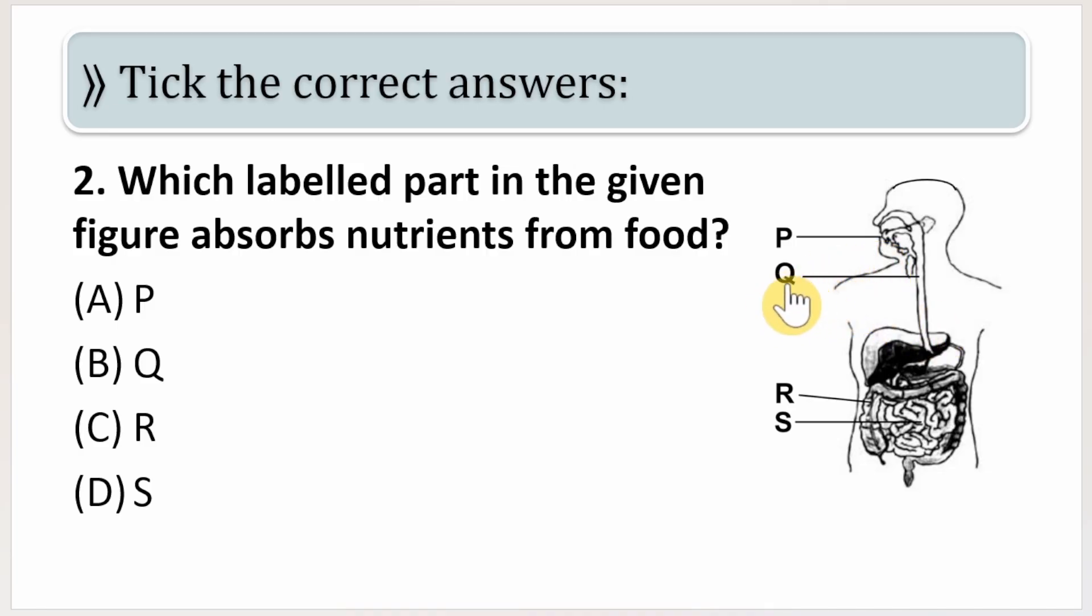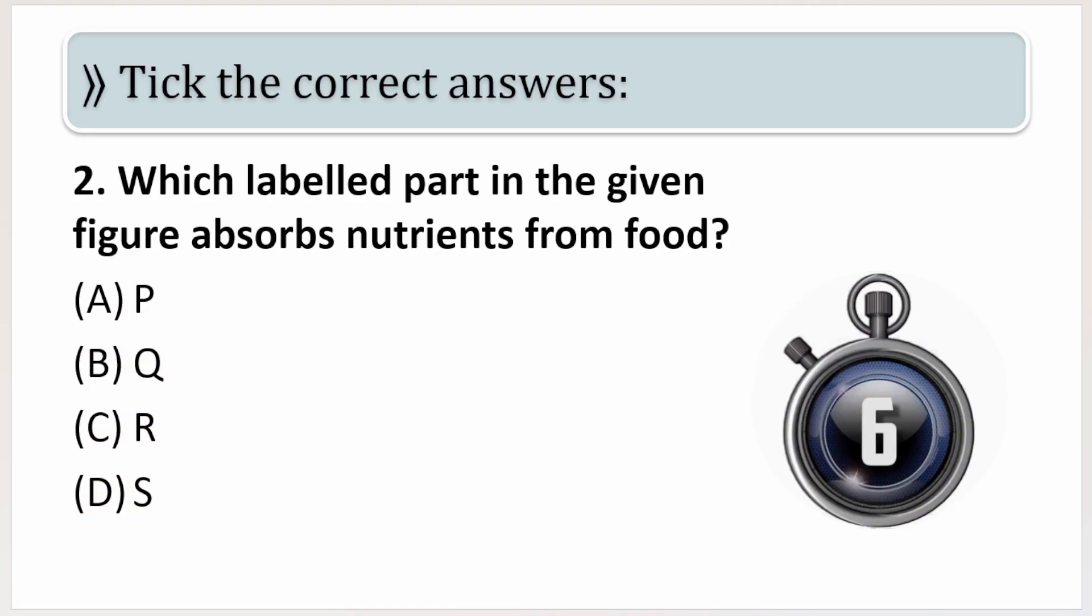Then food pipe is named as Q, then R over here which is near large intestine, and S over here which is small intestine. So options: A is P, then B is Q, C is R, and D is S. And your time starts now.